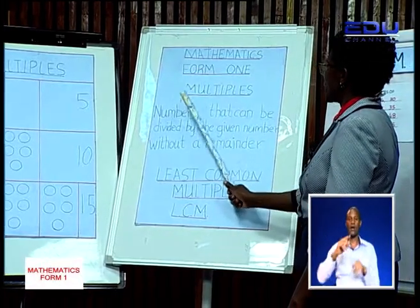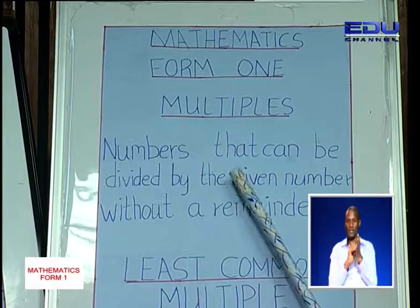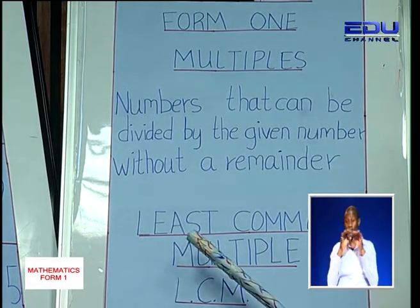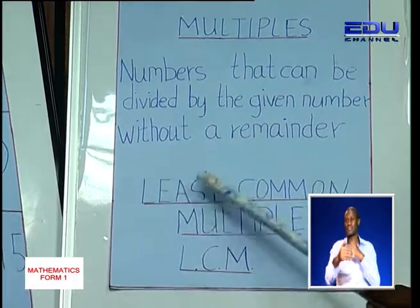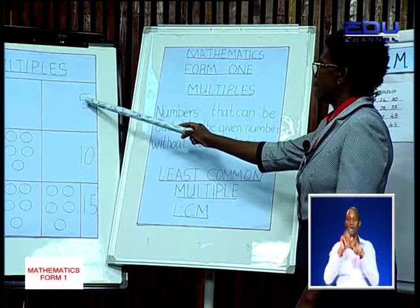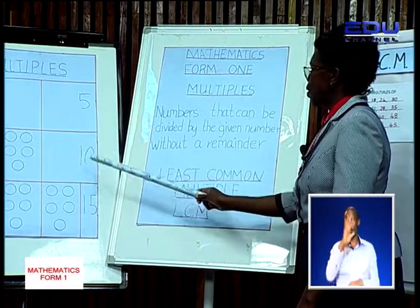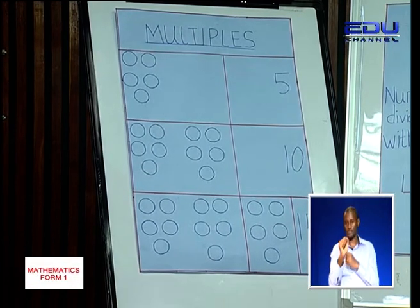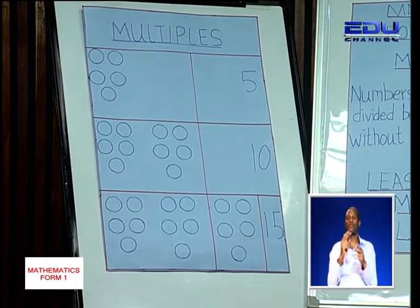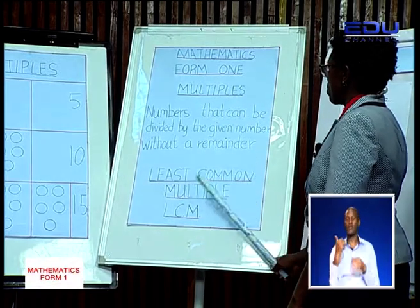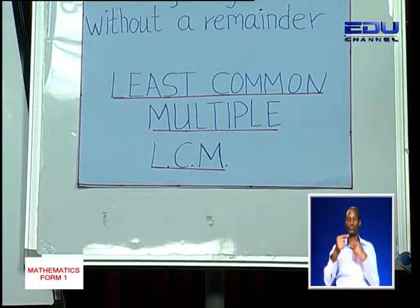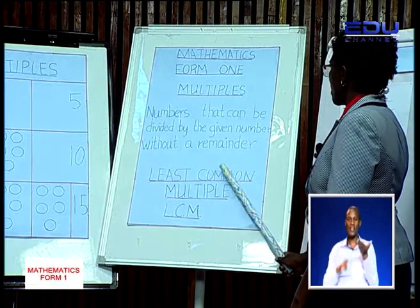So, a multiple is a number that can be divided by the given number without a remainder. From this definition, we can go to the next part, which is the least common multiple. 5 has many multiples — we have 10, we have 15 — but there is a least common multiple, especially if you are comparing 2 or more numbers. This least common multiple is what we abbreviate as the LCM. So, how do we calculate the least common multiple?